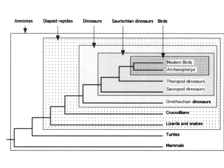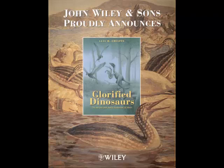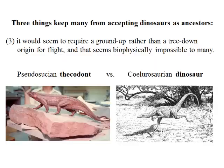Modern birds and theropod dinosaurs share unique, derived characters because birds are dinosaurs. A recent 2007 book emphasizes where we are with our knowledge of bird origins — we're right back where we started with Huxley: birds are nothing more than glorified dinosaurs. Doubts about dinosaur ancestry have been largely erased for paleontologists, though some ornithologists still struggle with how a bird could evolve from a ground-dwelling runner. But there are plenty of ways to see the evolution of flight from a bipedal critter, as we'll discuss in a couple of lectures.